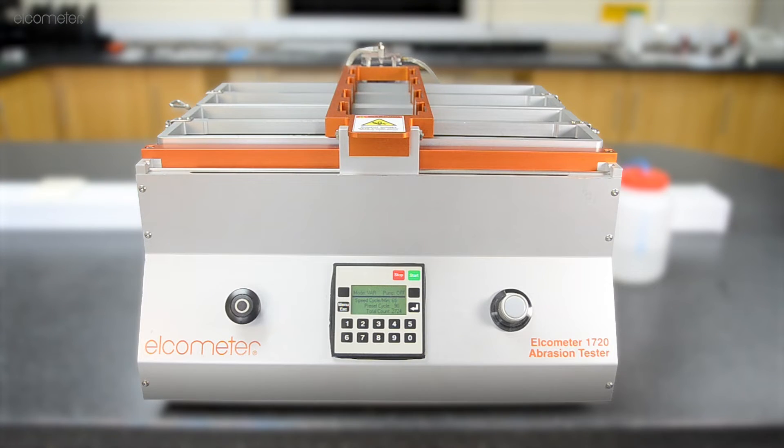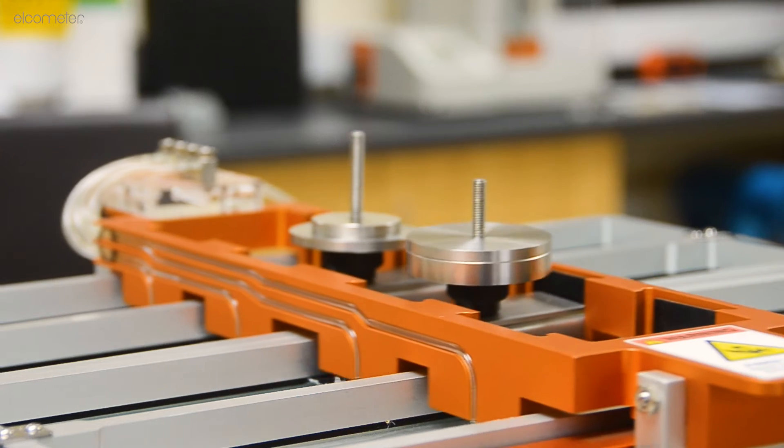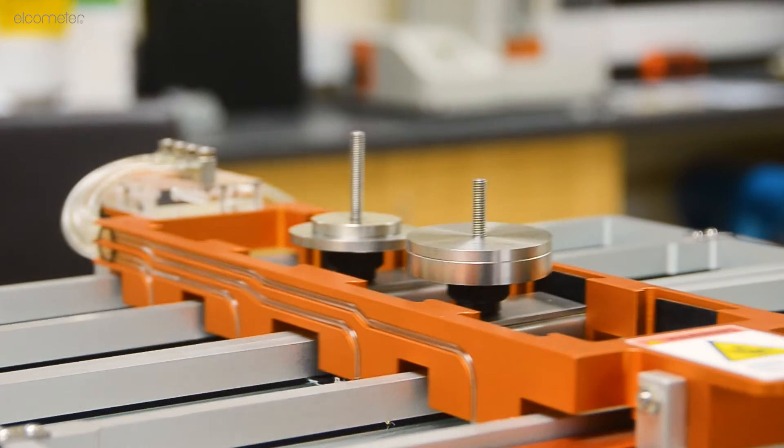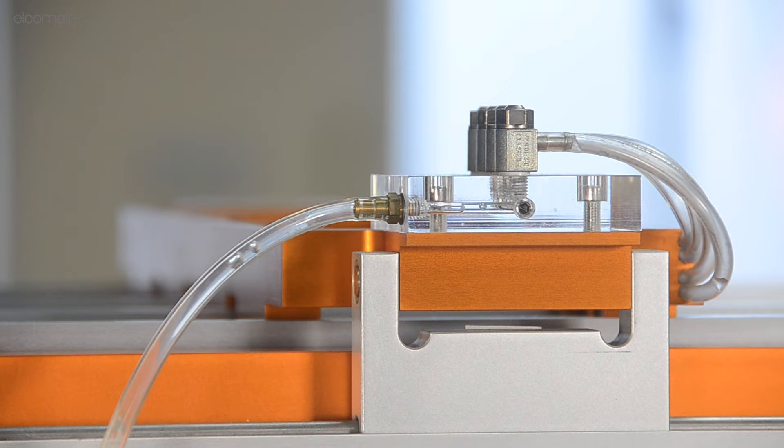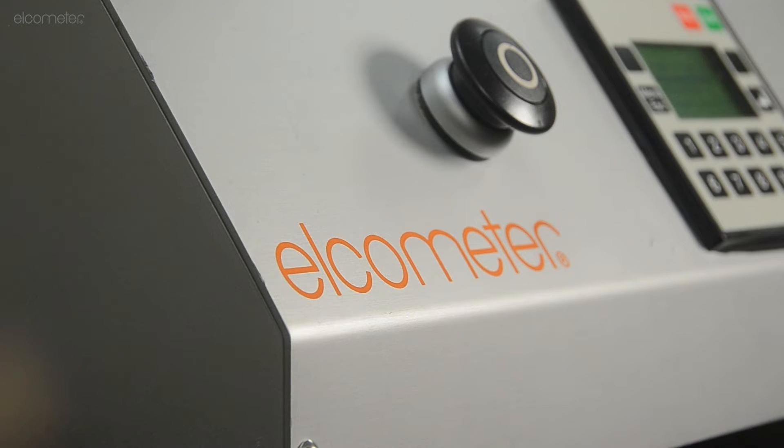The Elcometer 1720 Abrasion and Washability Tester has the ability to condense a product's lifespan to a much shorter duration, within a controlled and monitored environment in a manner that is consistent, repeatable, reproducible, and not feasible by hand.